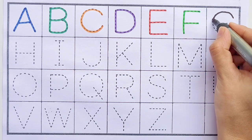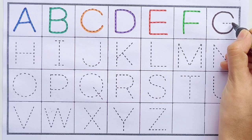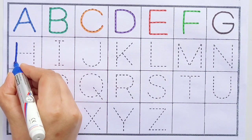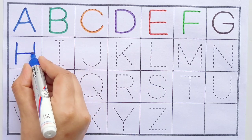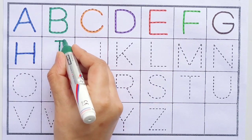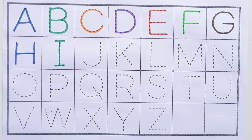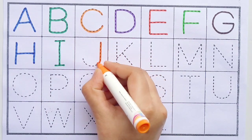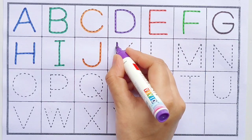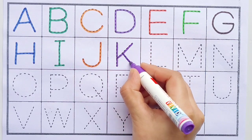G for Grapes, H for Hen, I for Ink Pot, J for Jug, K for Kite.